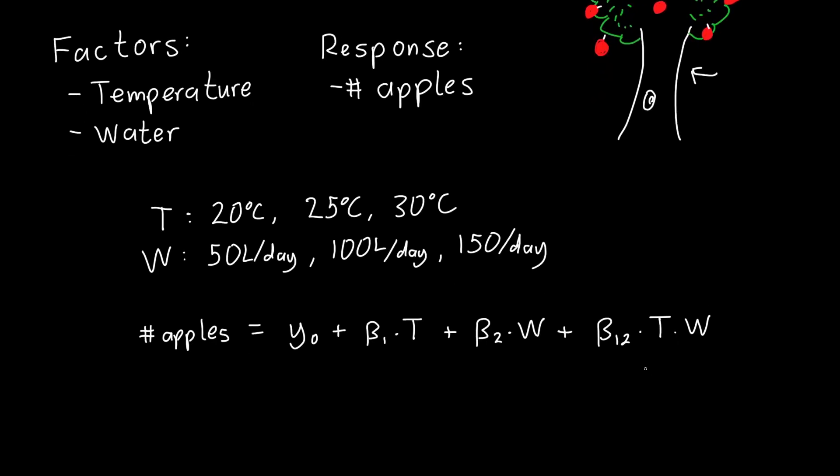And this is all fine and good. I can plug this into my favorite statistical package or calculate it myself. And maybe I figure out that my y₀ value is equal to, say, 340. My β₁ value is equal to minus 12. My β₂ value is equal to minus 3.9. And my β₁₂ value is equal to 0.16.